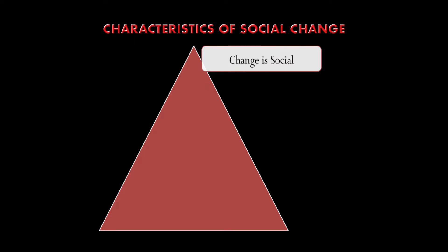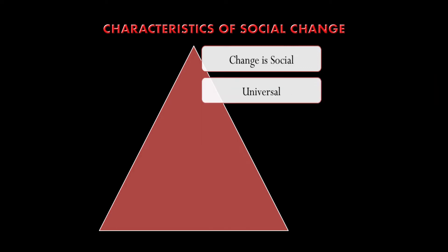Now let us understand the various characteristics of social change. The first is that the change itself is social in nature — it is not a change coming in an individual, but in a larger group of society, in social interactions and in the social structure. The second characteristic is that whenever social change takes place, it is universal. It takes place everywhere — be it a modern or primitive society, an industrialist or agricultural-based society. Social change is inevitable and present everywhere.